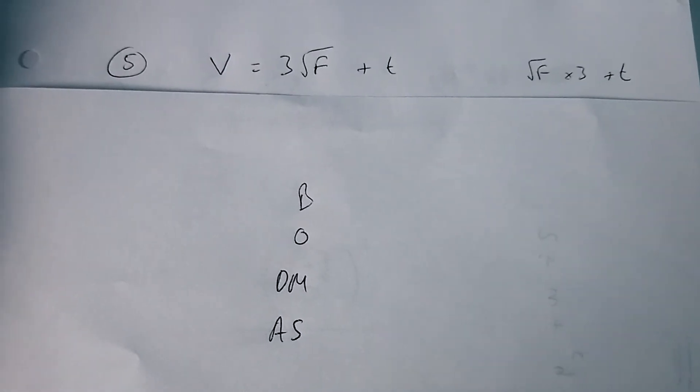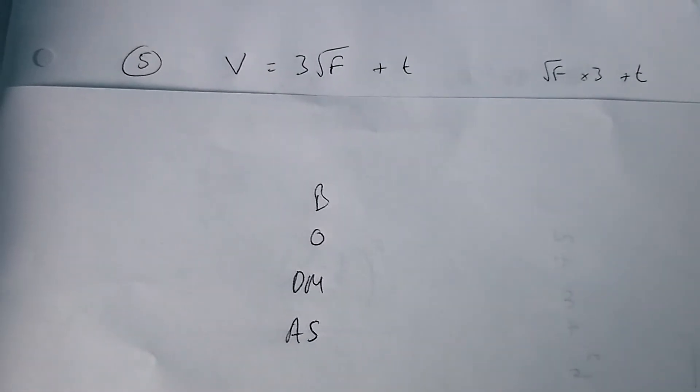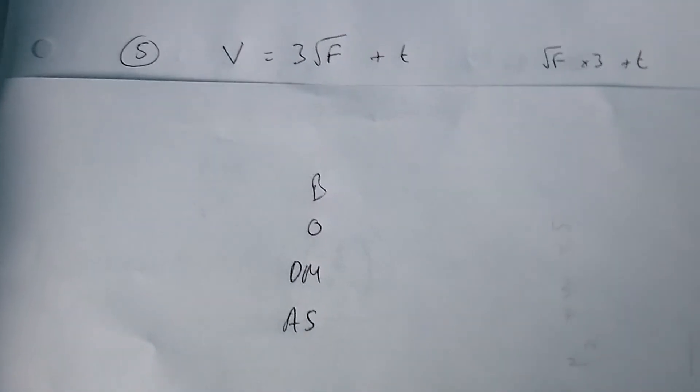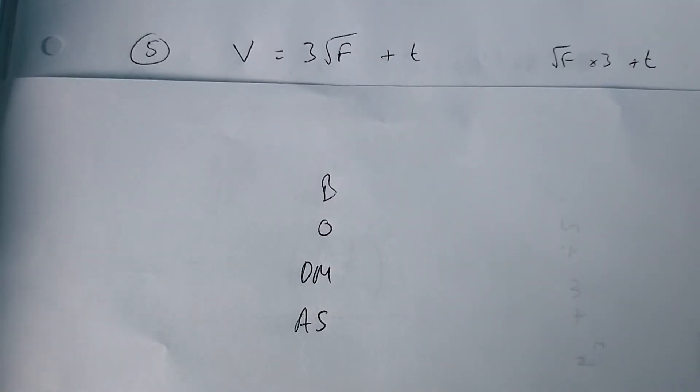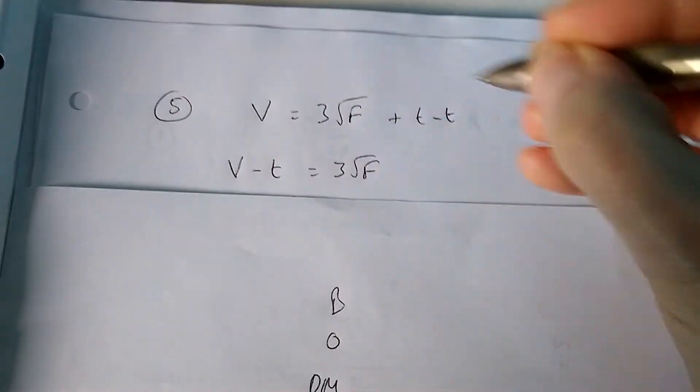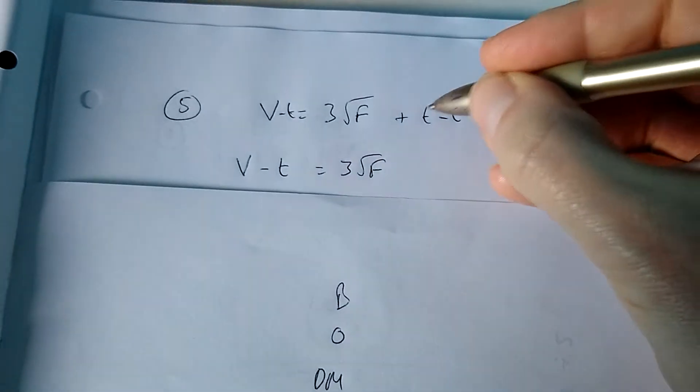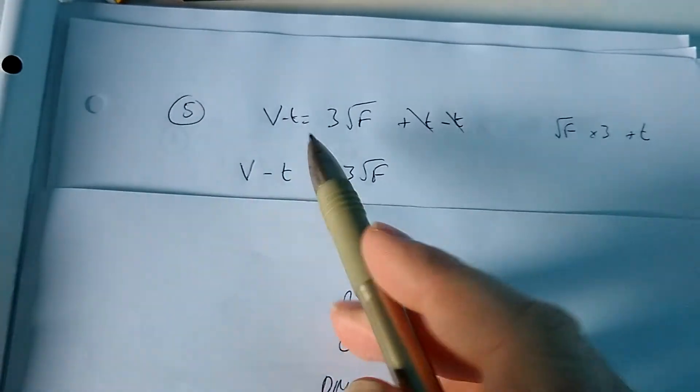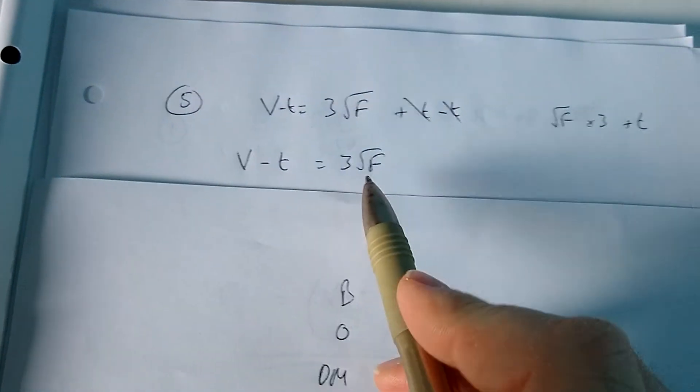So we need to undo those three operations in reverse order. Whatever we've done last, we need to undo first. We added on t last, so I'm going to subtract t from both sides. t minus t here is zero, so I'm left with v minus t equals three root f.